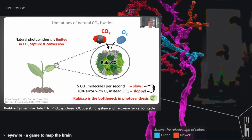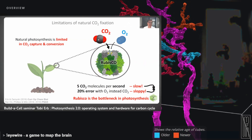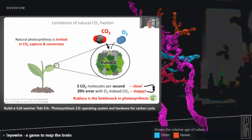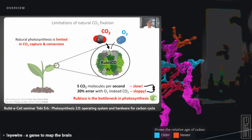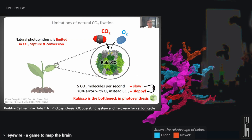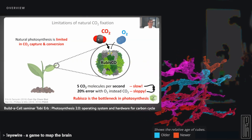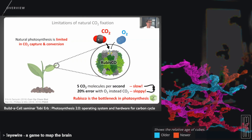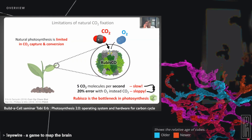RuBisCO is a very slow catalyst — on average it takes approximately 5 to 10 CO2 molecules per second, which is very slow compared to other enzymes in central carbon metabolism that can have turnover frequencies of 10,000 to 100,000 molecules per second. Additionally, RuBisCO is very sloppy — it fixes CO2 but also fixes oxygen, mixing them up at the active site with an error rate of approximately 20 percent. Every fifth time, instead of fixing CO2, RuBisCO fixes oxygen — a wasteful process called photorespiration that releases previously fixed carbon dioxide.